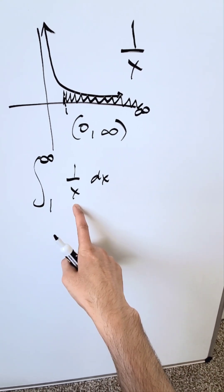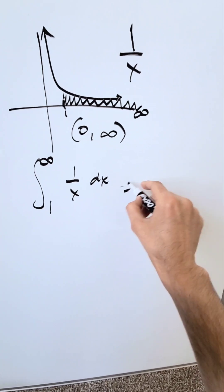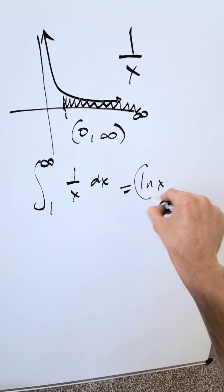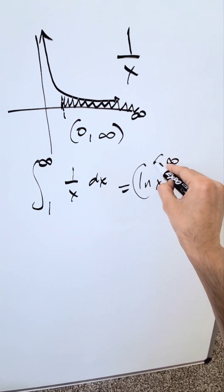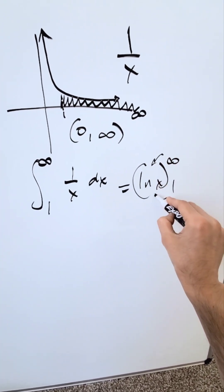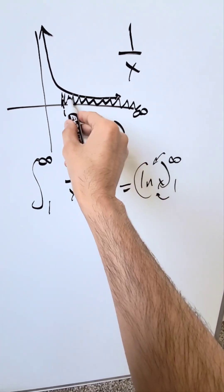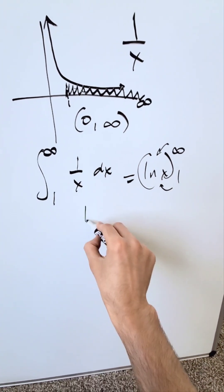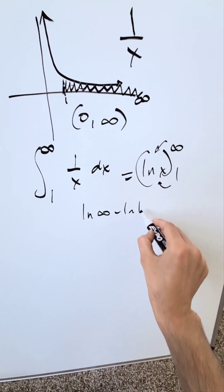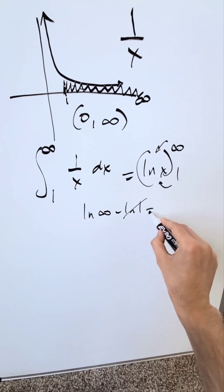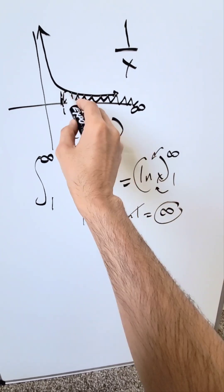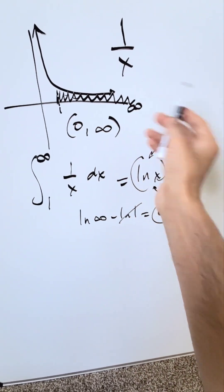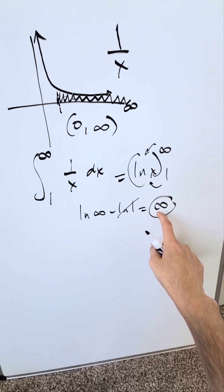The antiderivative of 1/x is natural log x. Evaluating from 1 to infinity — you take the upper limit minus the lower limit — you get natural log of infinity minus natural log of 1, which is 0. The end result is infinity. This shaded region is infinite in terms of its value.